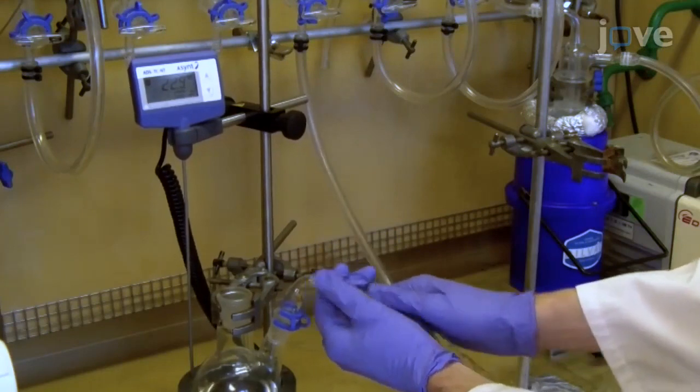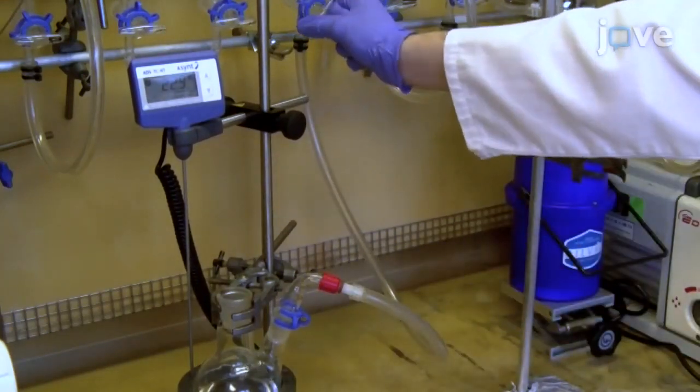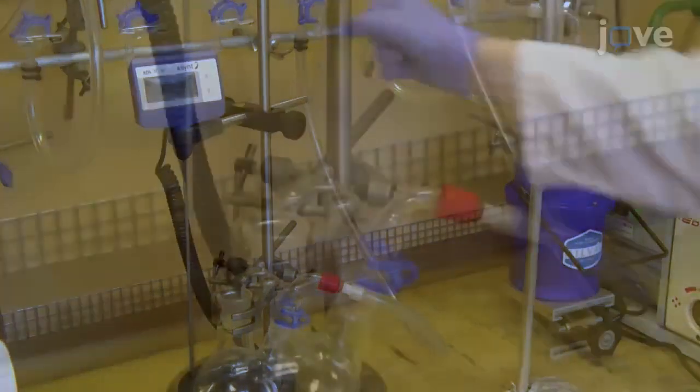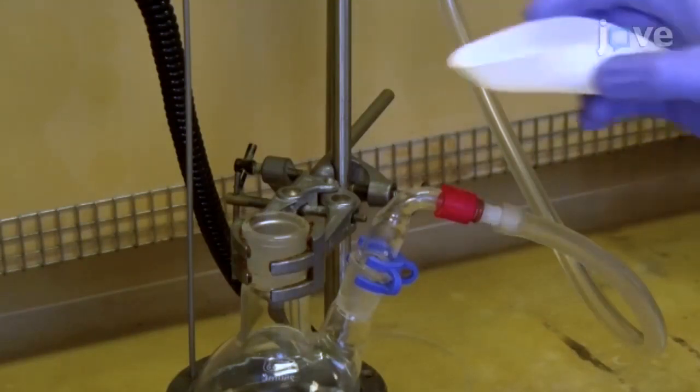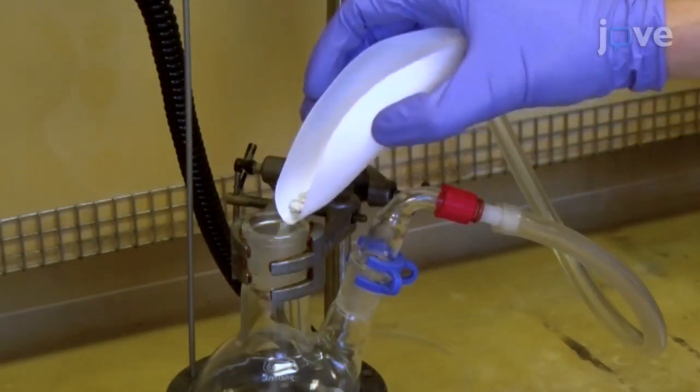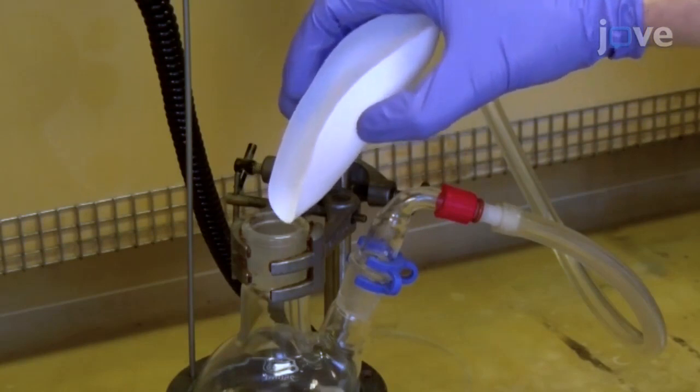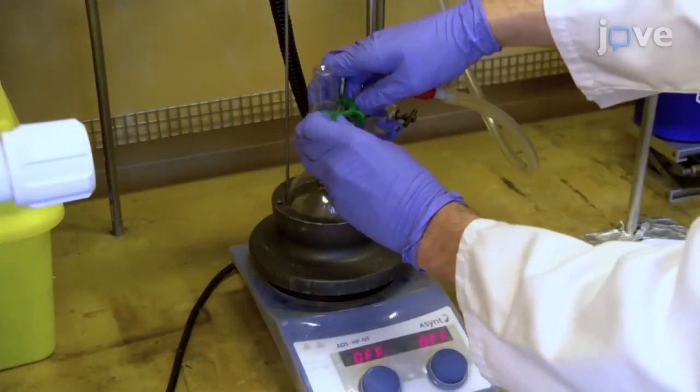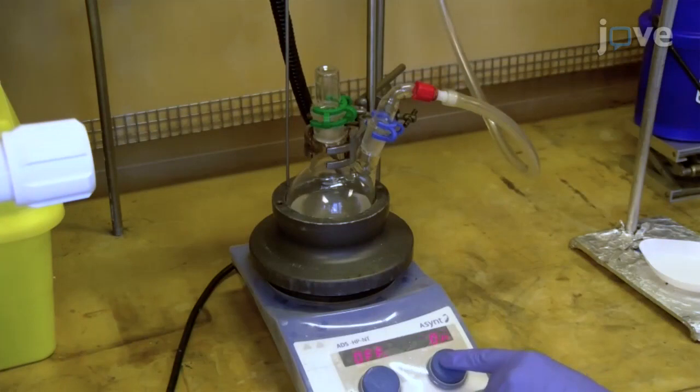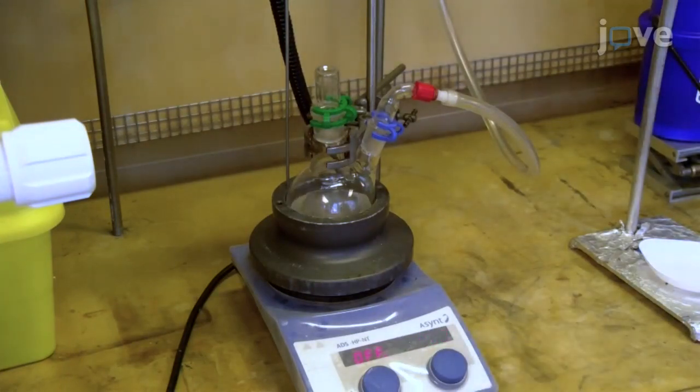Connect the round bottom flask to a nitrogen line through the tap on one neck. Under a steady flow of nitrogen at 3 PSI, add 1 gram of calcium hydride into the flask through the primary neck. Fit the second neck with a glass stopper and stir overnight at room temperature under a nitrogen atmosphere.